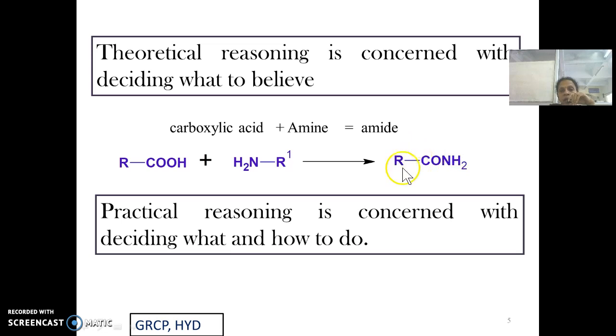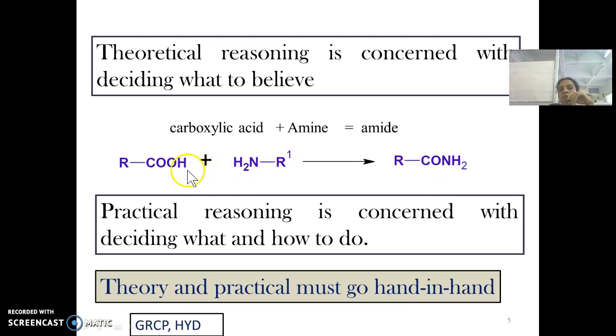But for this synthesis of an amide, the procedure involved may be different. It depends on the type of amide, types of the reactants that we are selecting. Theory-wise, there is only one concept that reaction of carboxylic acid with amine always gives us amide. But practically there may be hundreds of procedures available to get a particular amide. So that is how practical reasoning is concerned with deciding what and how to do. Always theory and practical must go hand in hand.